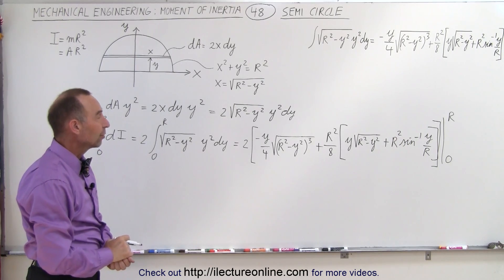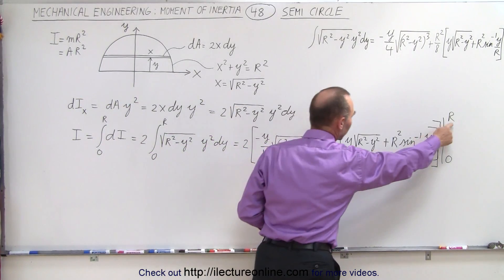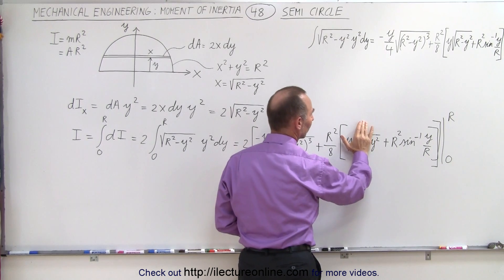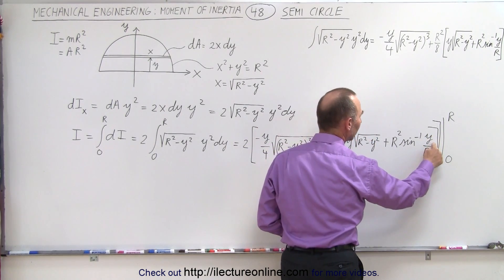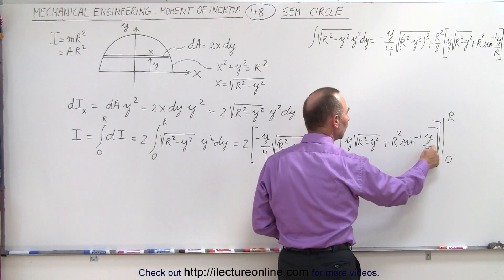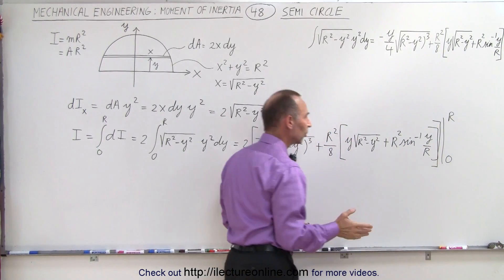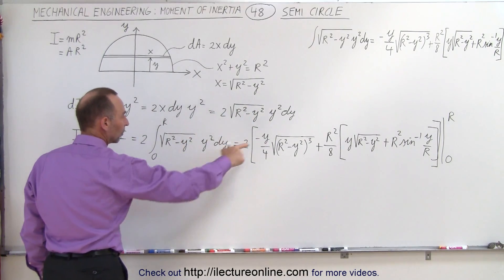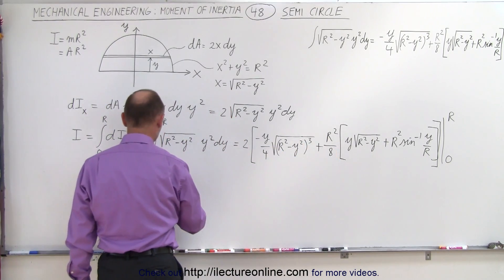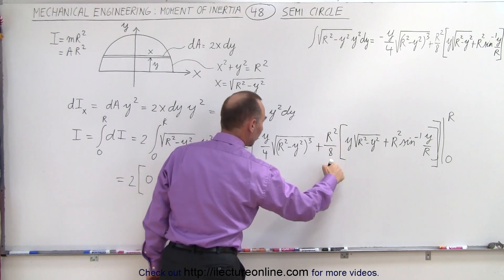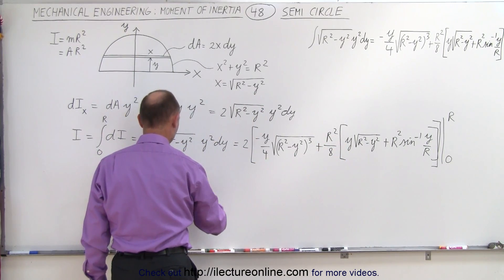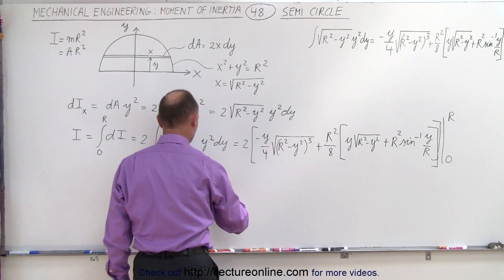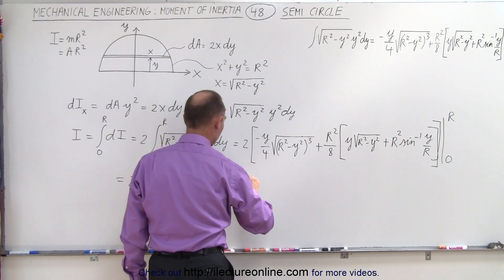When we plug in the upper limit r: over here we have r² minus r², which goes to 0; we have another r² minus r², which goes to 0; and here we have r divided by r, which is 1, and the arcsine of 1 is 90 degrees or π/2. So plugging in the upper limit gives us 2 times: a 0 term, plus a 0 term, plus r² over 8 times r² times the inverse sine of r over r.